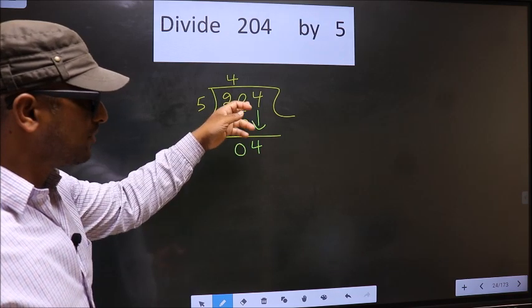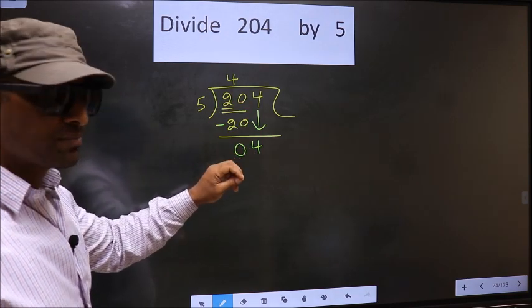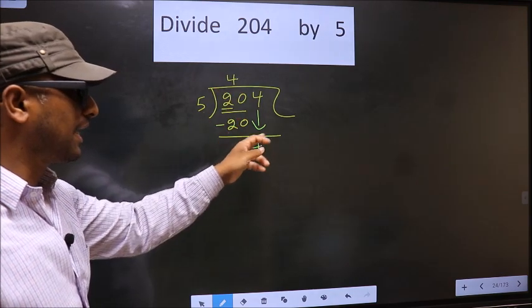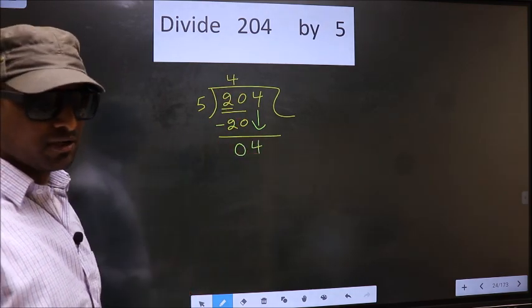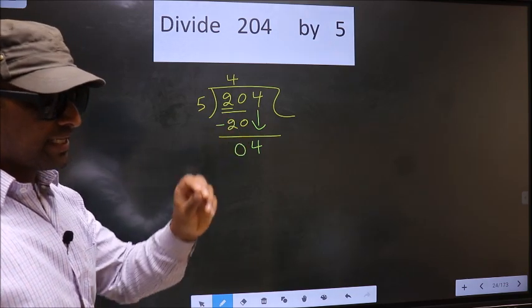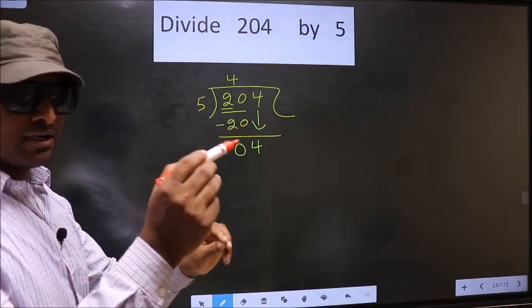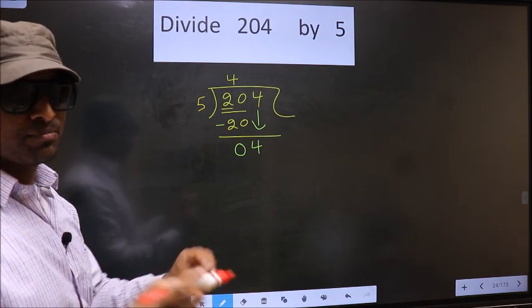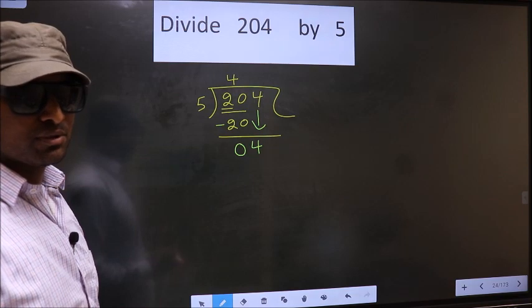Just now, you brought the number down. And in the same step, you want to put a dot and take 0, which is wrong. I repeat. Bringing the number down and putting a dot and taking 0, both at the same step, you are not supposed to do.